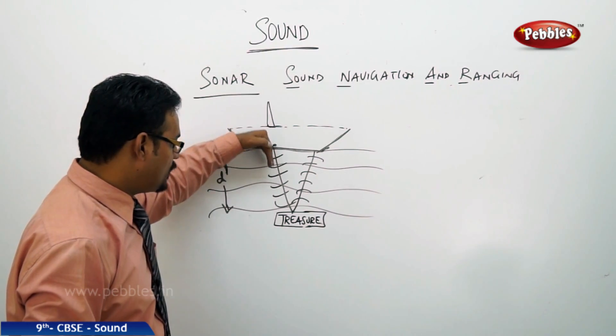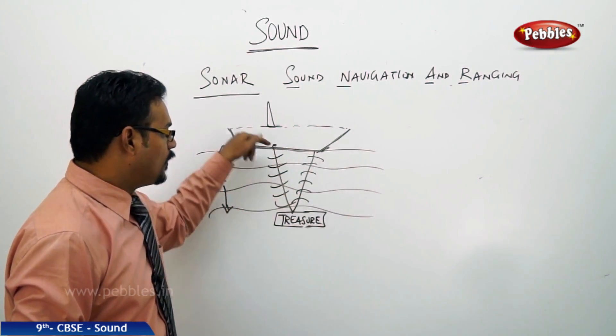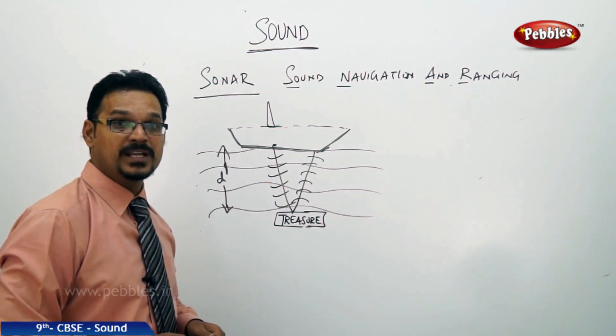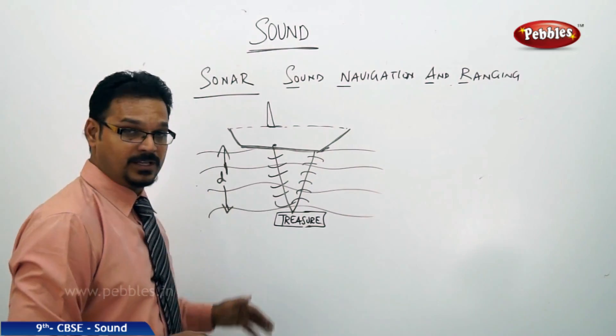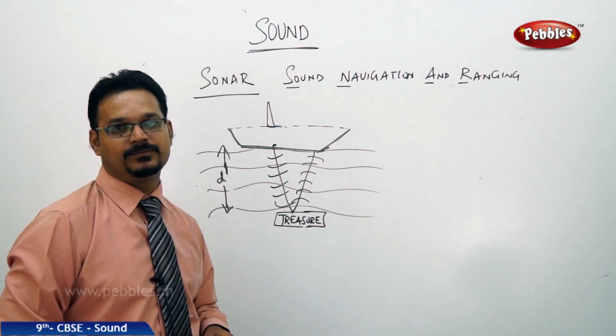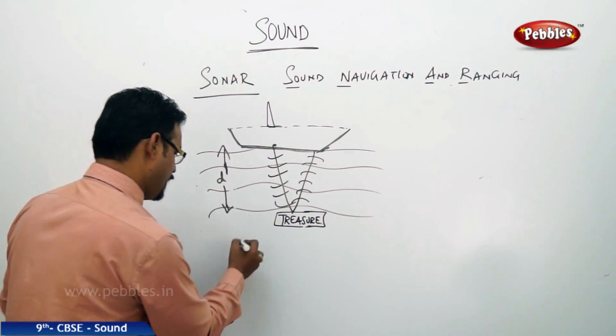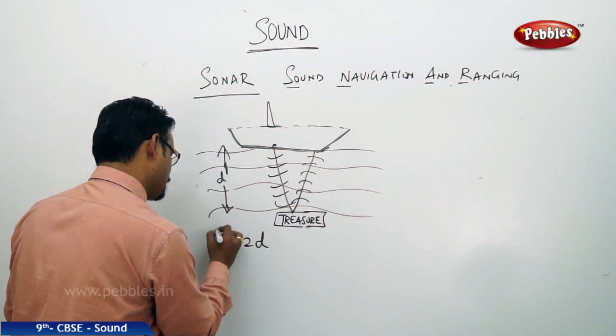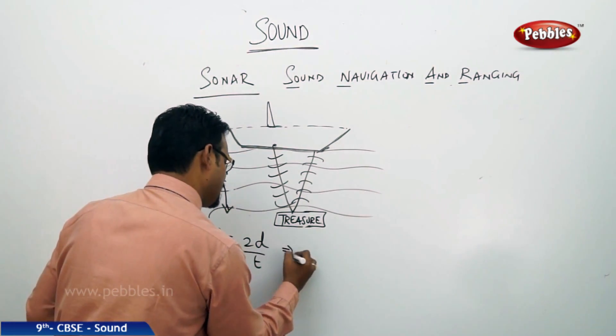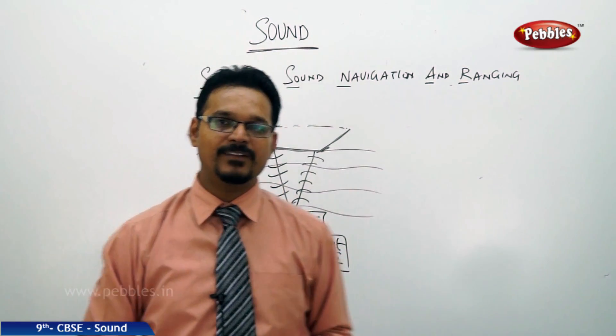See the board. There is a ship sailing on the water. Under the water you have a treasure. Using a SONAR machine, they send waves. These waves travel into the water and reflect back. With the time of echo, the time of reflection, they usually find the distance between the ship and treasure, or the depth of the sea. Same formula: v equals 2d by t, implies d equals vt by 2.